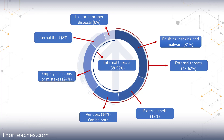There are many more external threats, but because of our layered defense, a lot of times they're not as effective. Whereas with internal threats, because they've gotten through our outside layer of defense, regardless of whether it's malicious or not, they have a higher chance of succeeding. Data loss or improper disposal is 6%, internal theft is 8%, and employee actions or mistakes are 24% — all of which can be minimized with proper training and education.